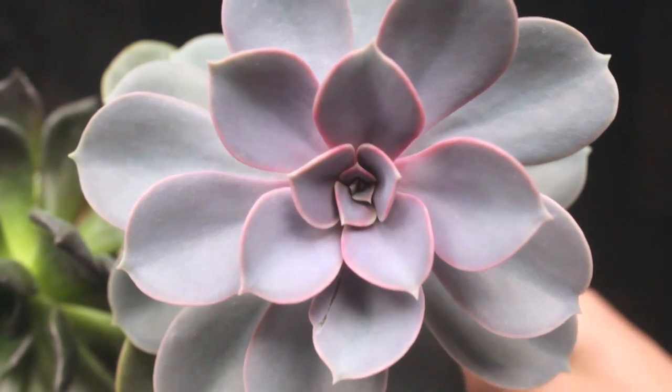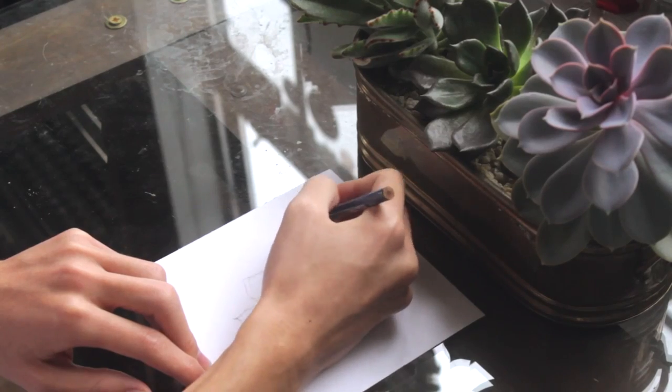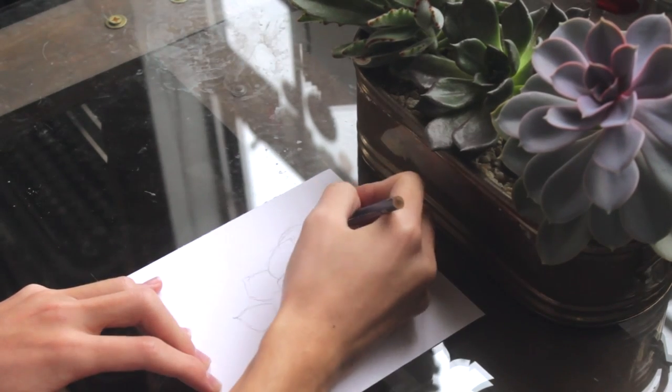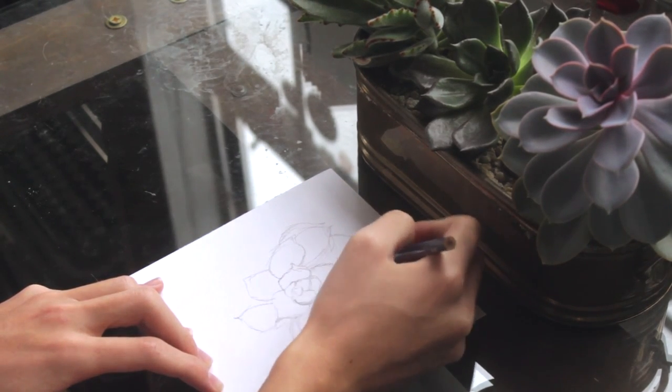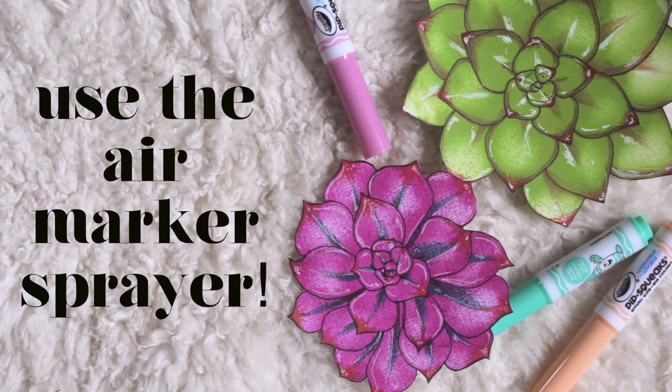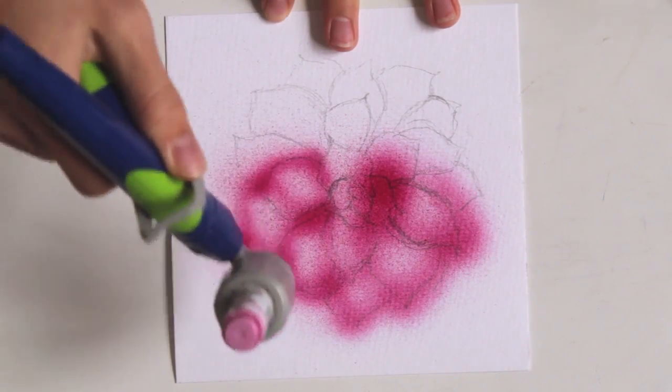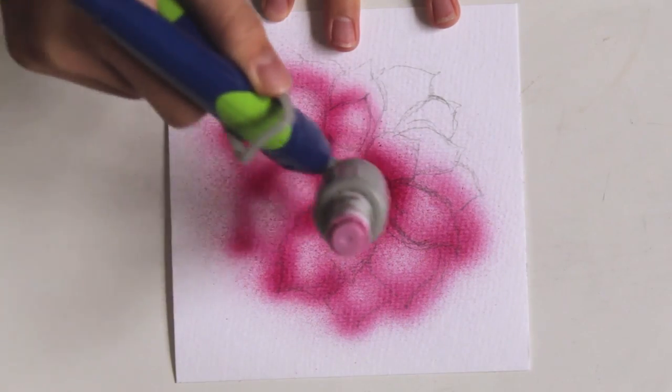First, you're going to want to pick a succulent to base the drawing off of. Then begin to sketch the succulent of choice onto some thick watercolor paper. You want to use watercolor paper because you're going to use a lot of layers of marker on this drawing. After sketching, we're going to begin coloring the drawing with the air marker sprayer. All I did was closely follow along the sketch lines. This makes it so that the color is more condensed near the leaves, creating a sense of shadows and highlights.